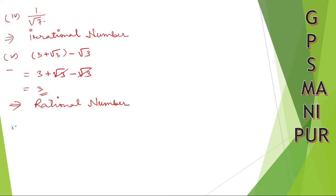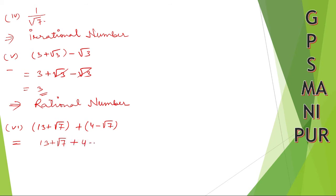Roman number 6: (root 13 plus root 7)(root 4 minus root 7). Open the bracket: plus 4 minus root 7. The root 7 and minus root 7 cancel out; 13 plus 4 equals 17. So 17 is a rational number.